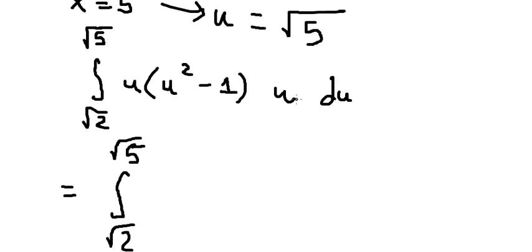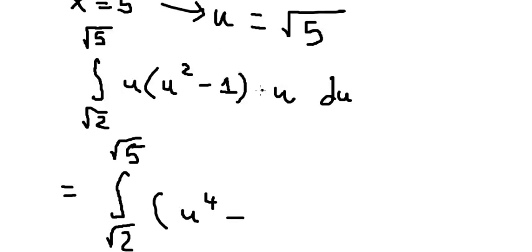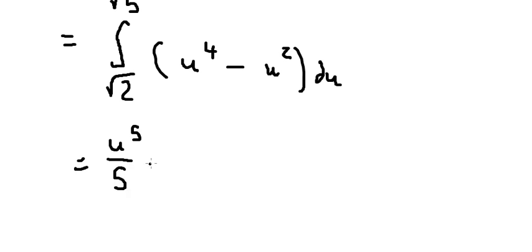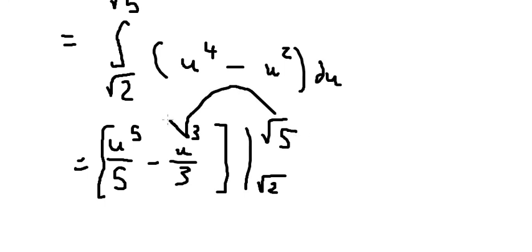Now we simplify. u multiplied by u and u² gives us u to the power of four, and the second term gives us u². The integral of u⁴ is u⁵ over 5, minus u³ over 3, evaluated from the square root of 2 to the square root of 5.